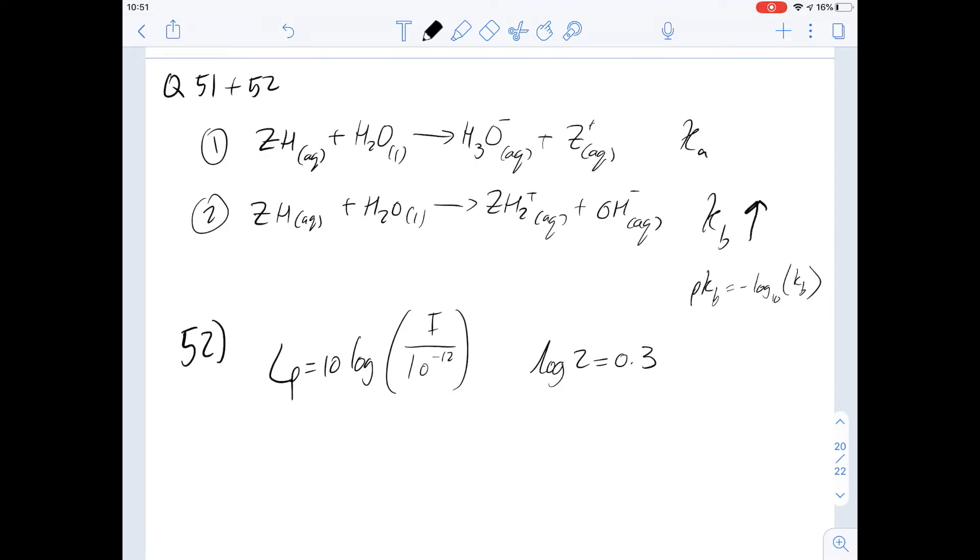The stronger a base is the higher this value will be, and so whenever you take the negative log of that the smaller the pKb will be. So for a very strong base you'd expect its pKb to be very small and the pKa of its conjugate acid to be very high. That means the answer for this one is going to be A.